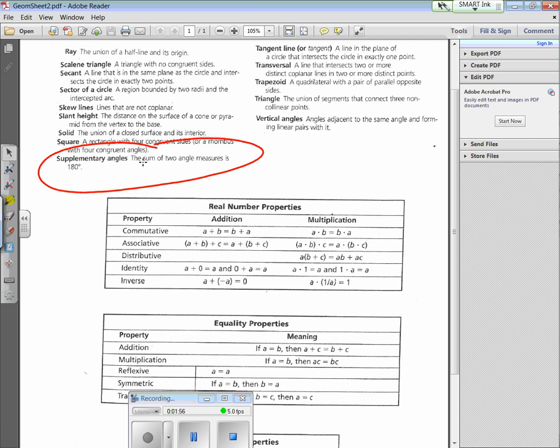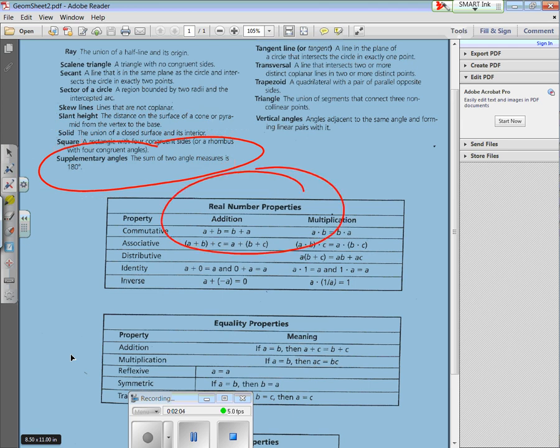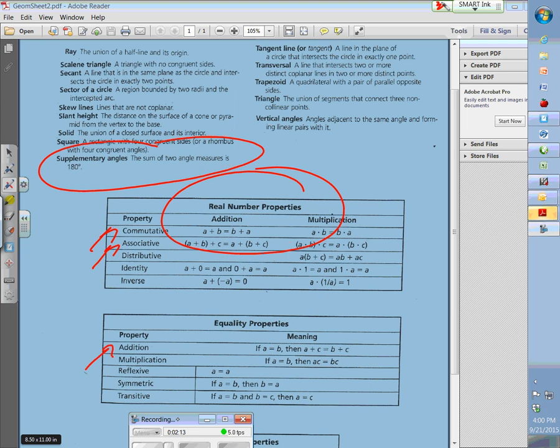If you notice here at the bottom, we've also got the properties: commutative, associative, distributive, identity, inverse. And then don't forget the equality properties - things like addition, multiplication, reflexive, symmetric, transitive.